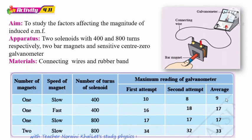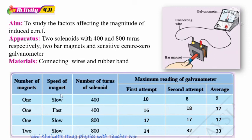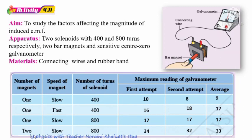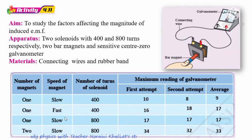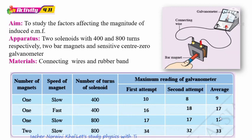From the readings, we can see: by increasing the speed of the magnet, the galvanometer reading increases. By increasing the strength of the magnetic field (using more magnets), the reading also increases. By increasing the number of turns from 400 to 800, the reading also increases. So there are three factors that affect the magnitude of induced current flowing in the galvanometer.